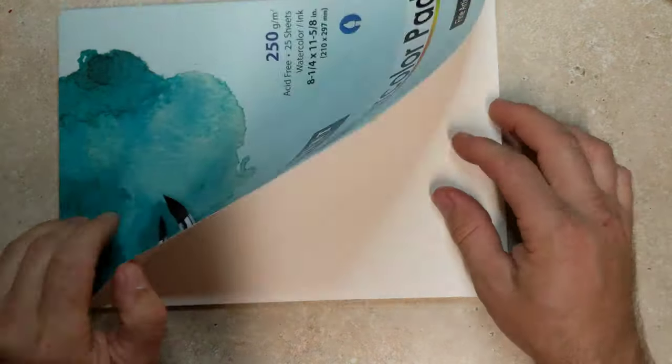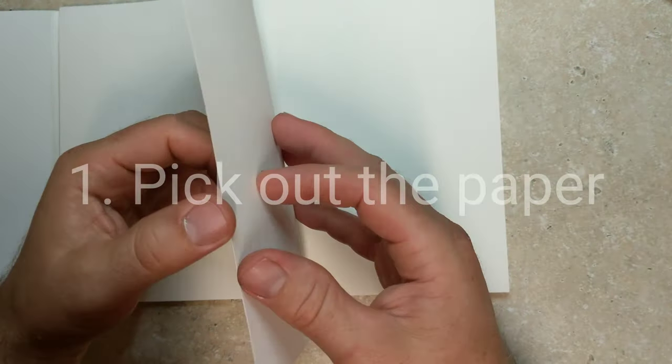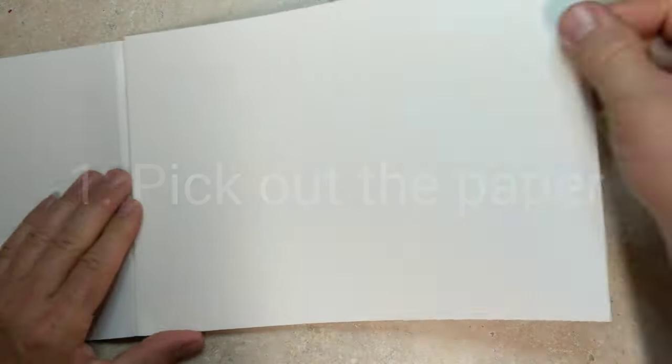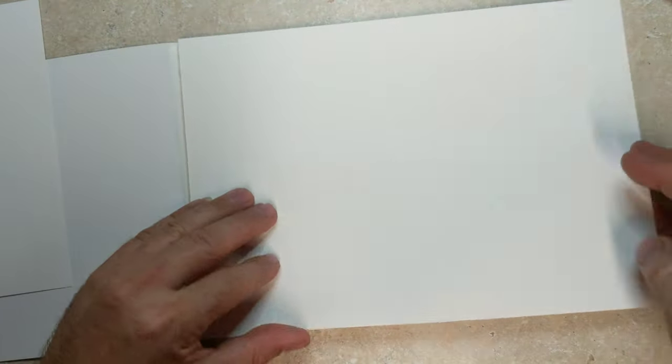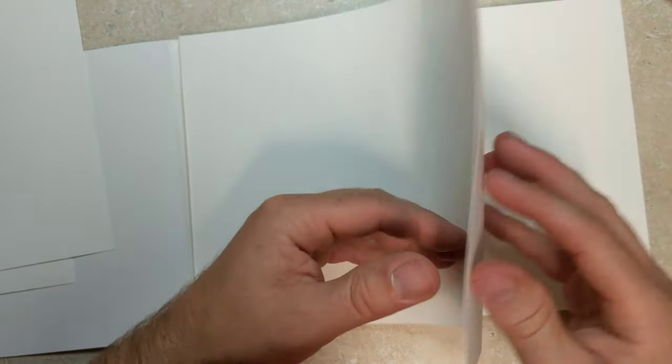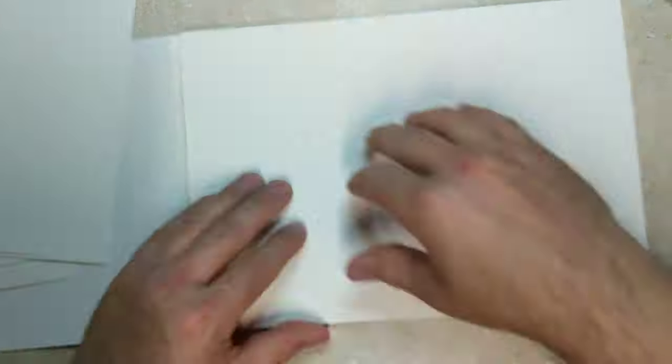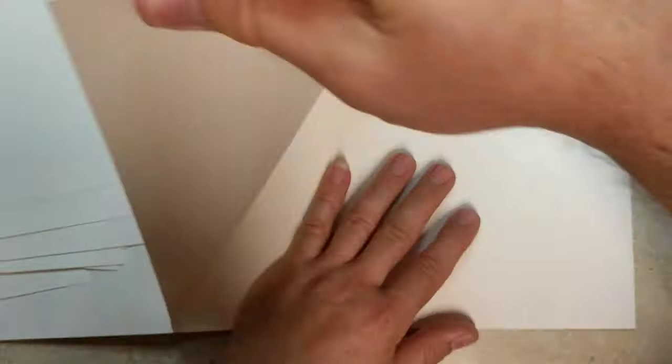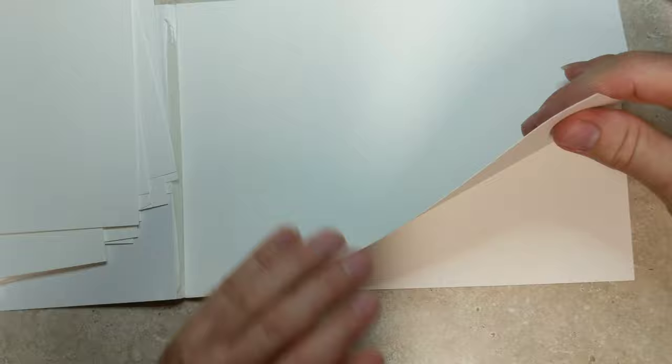The first thing you're going to need to do is pick out some paper. I used some watercolor paper. It was kind of a cheap pad of watercolor paper. The paper is pretty thick, and so I just took the pad and I took it apart page by page.